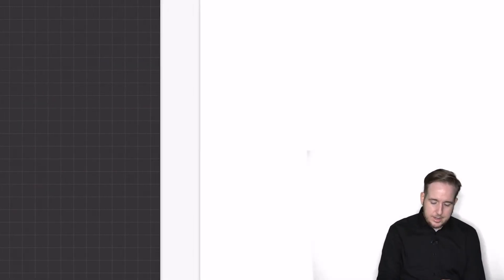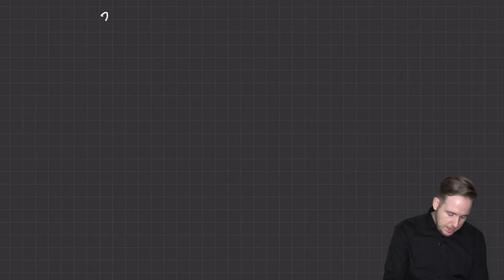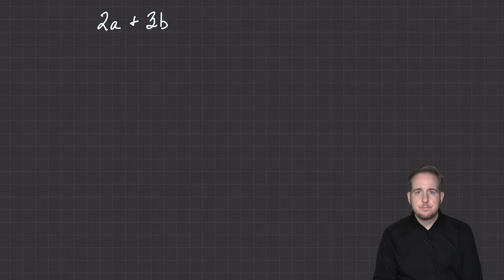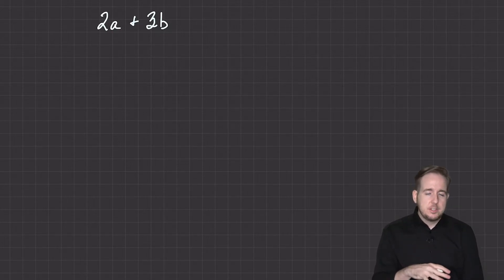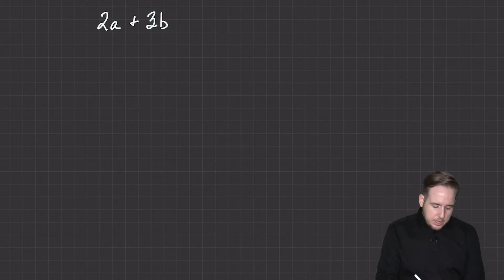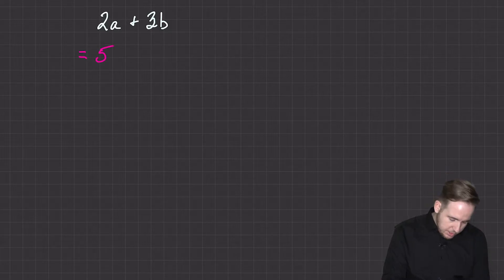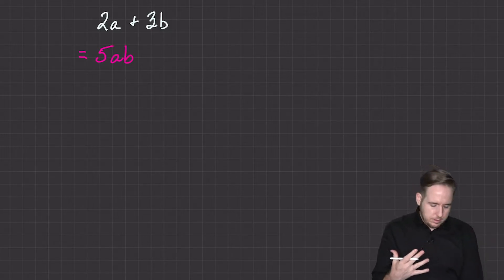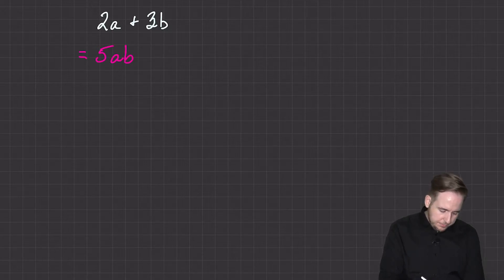Now what happens if you have unlike terms? So what happens if I have 2a plus 3b? Think about it. Turns out the answer is nothing. This is as simple as it is going to get. Unless somebody is prepared to give me hints, like tell me something about what the value for a is or what the value for b is, that's it. There is no, people try and be clever. Remember, write this in a different color. This is not right. You might want this to be 2 plus 3 is 5 and an a and a b go together to make an ab. This doesn't work.